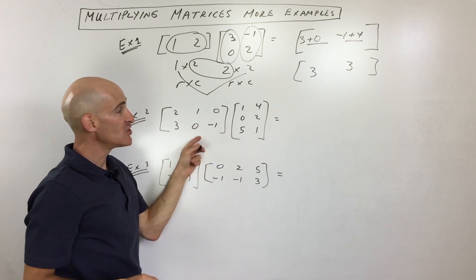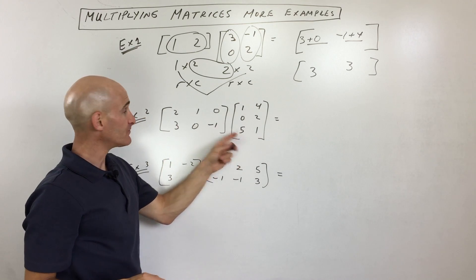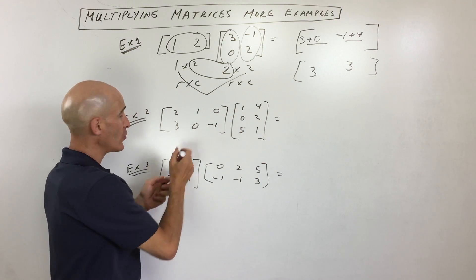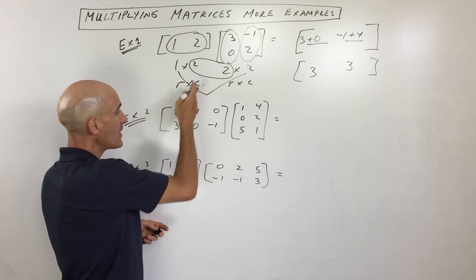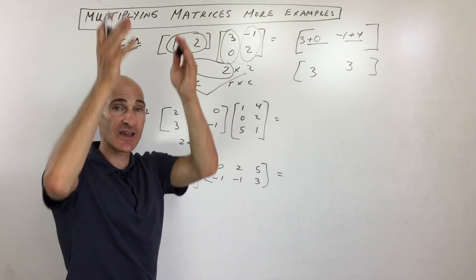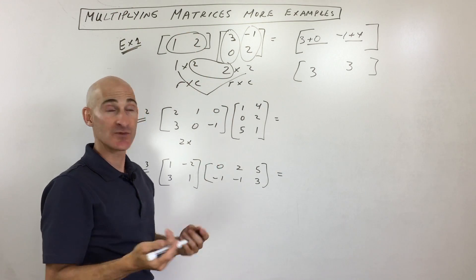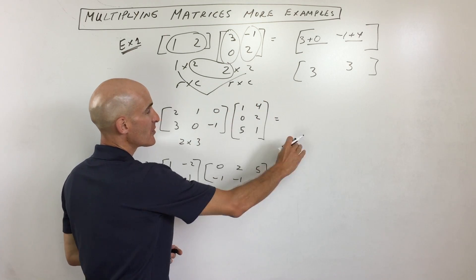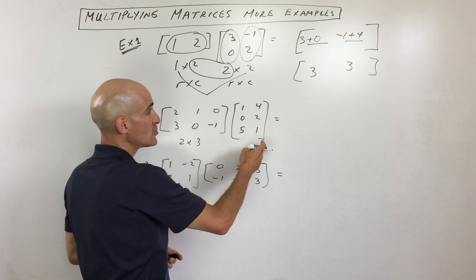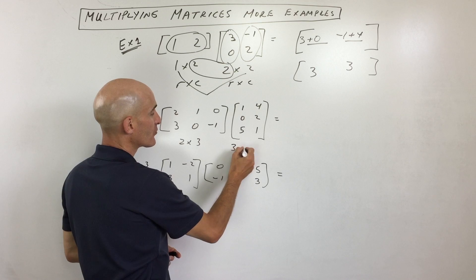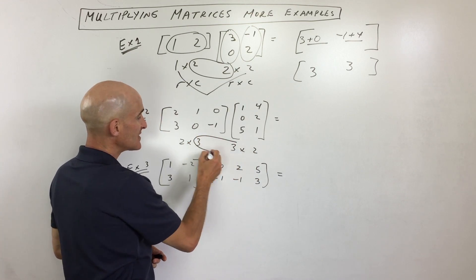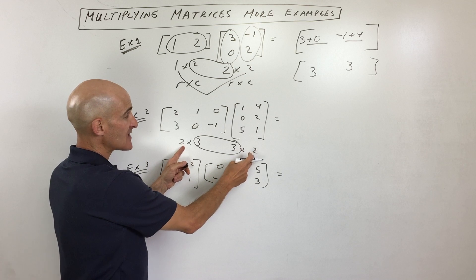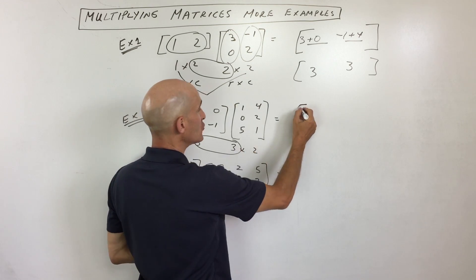So what do you think the dimensions are of these two matrices? Well, this one has two rows — those are horizontal — and one, two, three columns, columns like Roman columns of a building. This one has one, two, three rows by two columns, so three by two. Notice that these inner dimensions match, so we're good. And then we're going to end up with a matrix that has the outer dimensions — it's going to be a two by two.